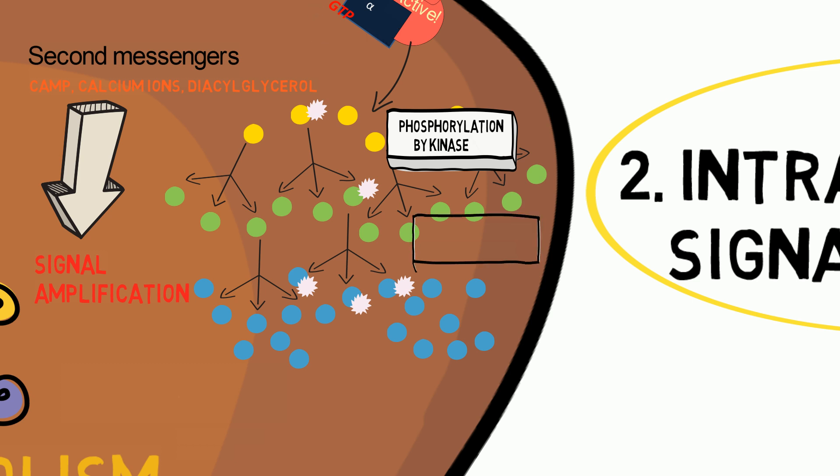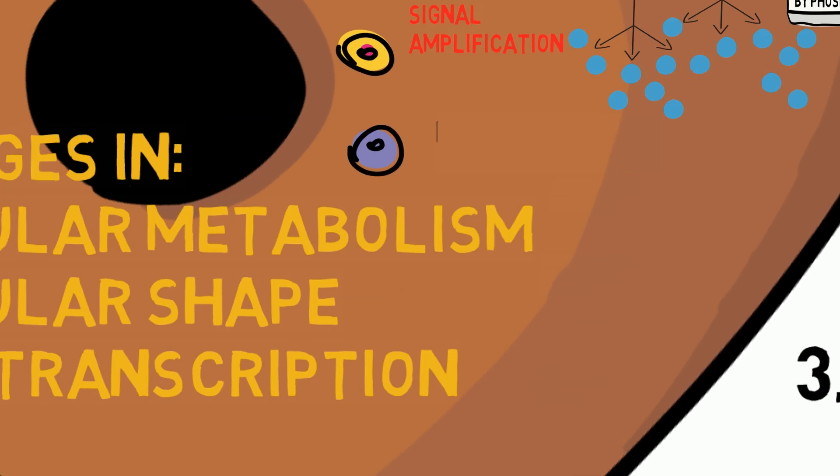The activation of the target protein can also be reversed via dephosphorylation by the enzyme phosphatase. Finally, the signal is transmitted to effector proteins, which help to mediate the cellular responses.